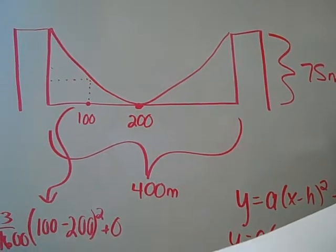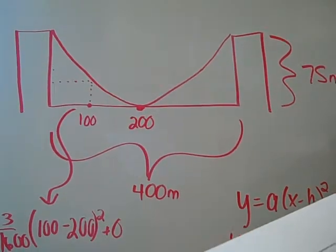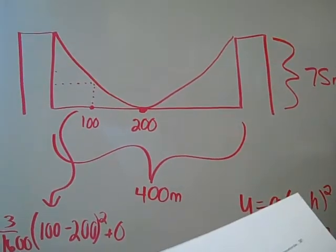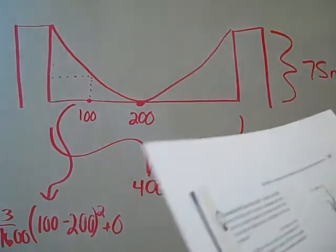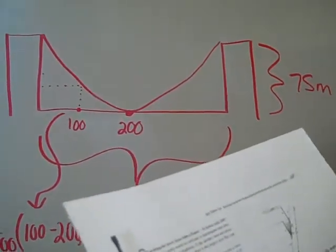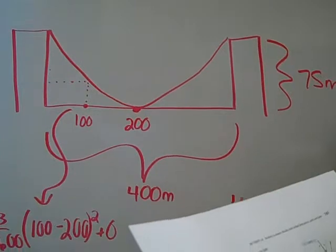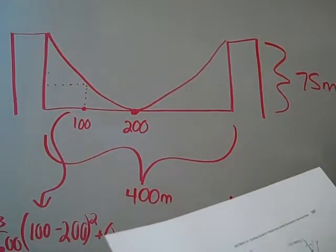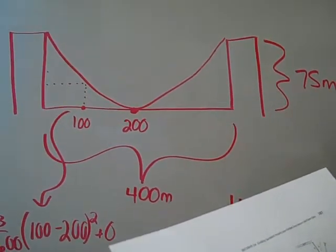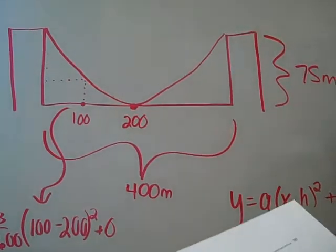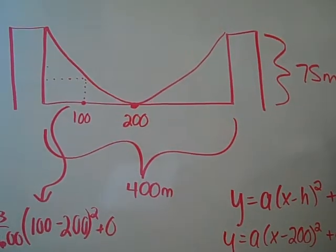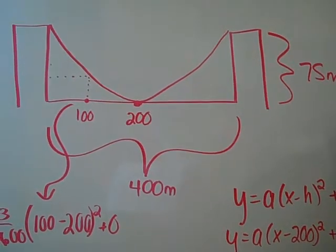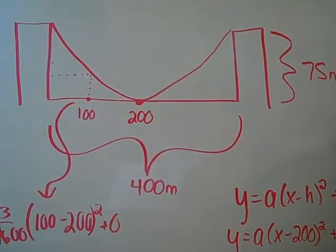A suspension bridge with weight uniformly distributed along its length has twin towers that extend 75 meters above the road surface and are 400 meters apart. The cables are parabolic in shape and are suspended from the top of the towers. The cables touch the road surface at the center of the bridge. Find the height of the cables at the point 100 meters from the center.